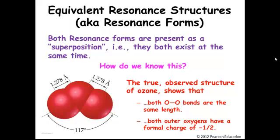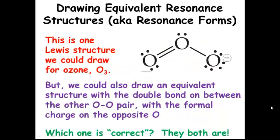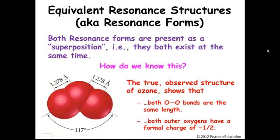How do we know that? Basically from experiment. We know that these bonds are exactly the same length, and we also know that the partial formal charge is the same on both. A double bond is shorter than a single bond, so if only one resonance form existed, this bond would have to be shorter than the other. But we see that both bond lengths are the same, so they both really have the same bond.